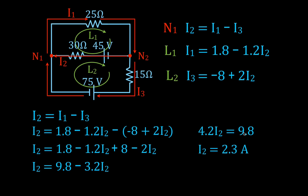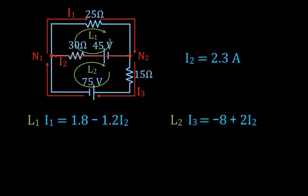We have a positive answer for I2, which means we chose the correct direction. I2 is flowing from right to left at 2.3 amperes. Now we can substitute I2 equals 2.3 back into the expression for I1: 1.8 minus 1.2 times 2.3 gives I1 equals minus 1 ampere.